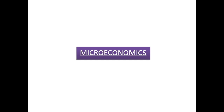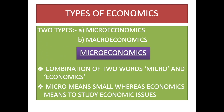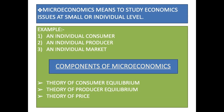Coming to the next topic — the types of economics. There are two types: one is microeconomics, the other is macroeconomics. Microeconomics is a combination of two words — micro and economics. Microeconomics is the study of economic issues prevailing at the small level, and how to solve those issues and use resources optimally. We can say microeconomics means studying economic issues at the small or individual level — like an individual consumer, an individual producer, or an individual market. There are three components of microeconomics.